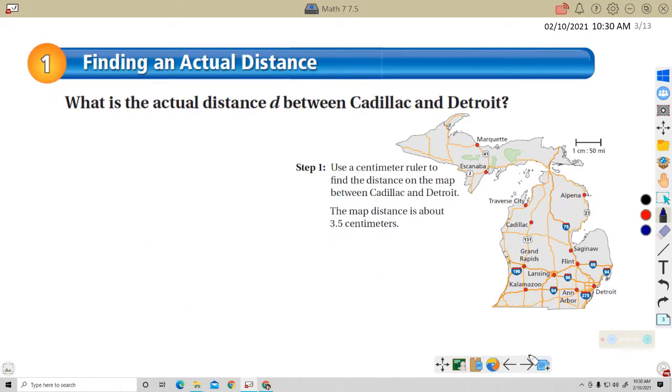Let's try this. It says, what is the actual distance D between Cadillac and Detroit? So here's Detroit and Cadillac Ranch is right here. And step one, use a centimeter ruler to find the distance on the map between Cadillac and Detroit. Well, we're not really using books and paper, and we're not really using rulers.